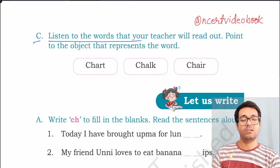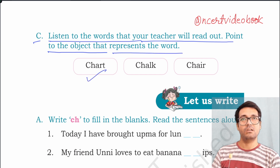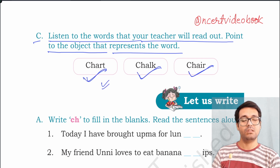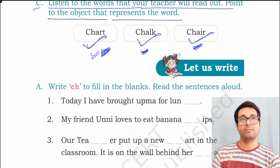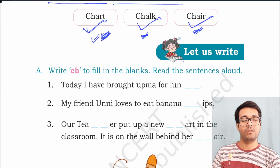Listen to the words that your teacher will read out. You have to point to the object that represents the word: chart, chalk, chair. You will see these things in the classroom — the chart hanging on the wall, the teacher writing on the blackboard using chalk, and the teacher sitting on a chair. You have to point to these things in the classroom.